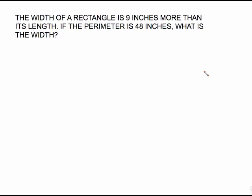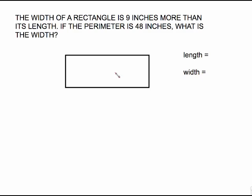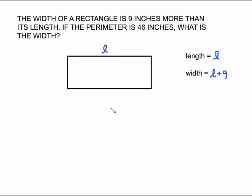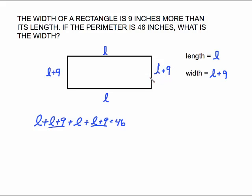Problem 3: The width of a rectangle is 9 inches more than its length. If the perimeter is 48 inches, what is the width? The dimension you were told nothing about was length, so length is the plain old variable L. Width is 9 more than the length, so width equals L plus 9. Label the picture: length sides get L, width sides get L plus 9.